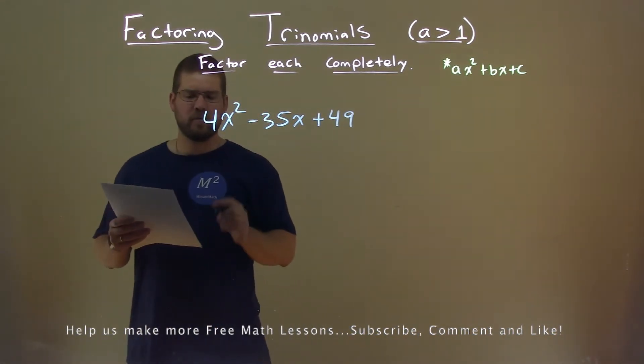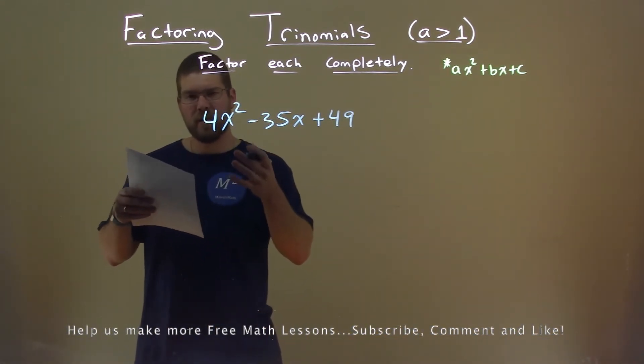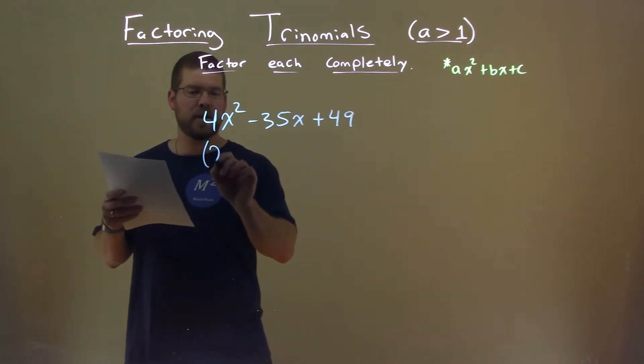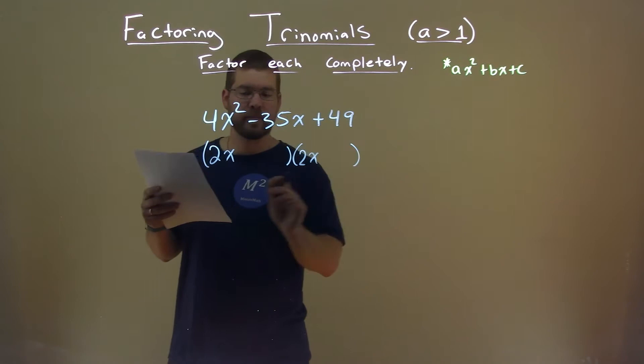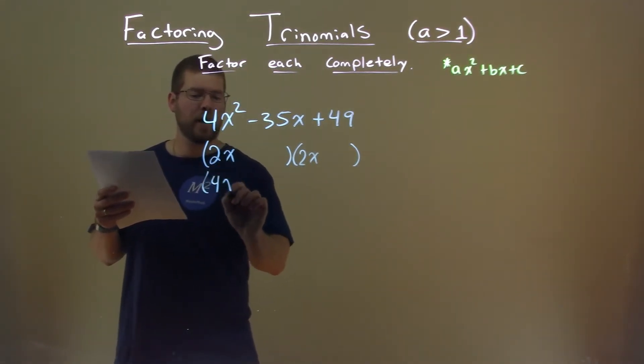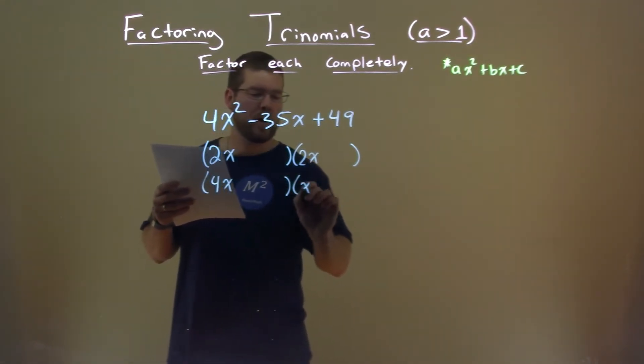Well, our a value is 4x, which means we have two different ways that this problem can be set up. It can be a 2x times a 2x here, that gives us 4x squared, or 4x times a 1x.